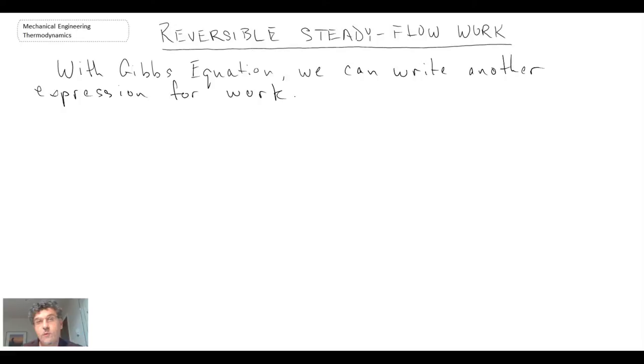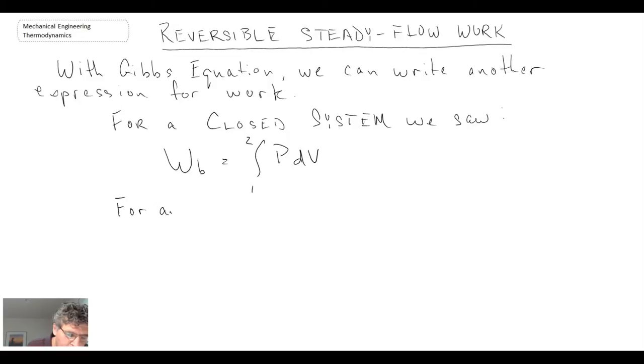We already have a few expressions for work that we've seen thus far in the course. We had one for a closed system and that was basically the boundary work. For a closed system we saw the boundary work was an integral of PdV. For an open system, we can use the first law to come up with a formulation for the work in a steady flow device.